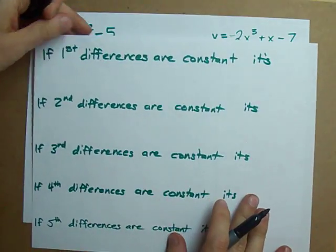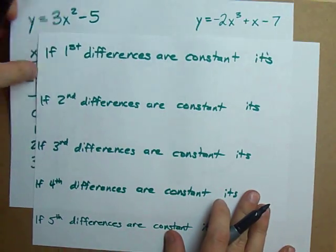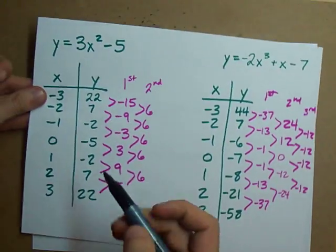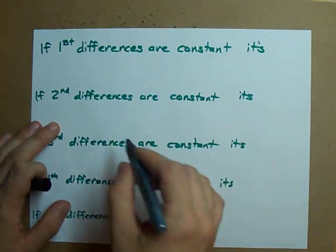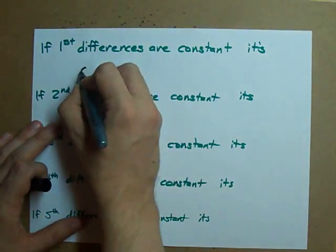Which means it's linear. The equation for the polynomial would be y equals ax plus b, or possibly mx plus b if you're used to slope y-intercept form.